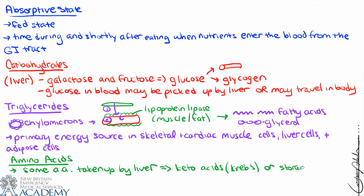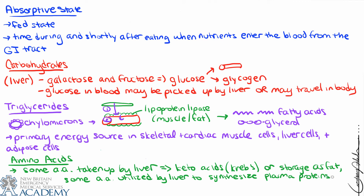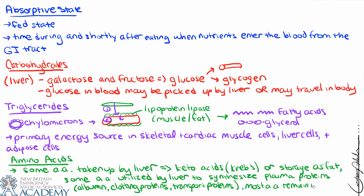Amino acids also enter the capillaries through the intestinal mucosa and travel to the liver via the hepatic portal system. In the liver, some amino acids are converted to keto acids for the Krebs cycle or stored as fat. Some are used to synthesize plasma proteins such as albumin, clotting proteins, and transport proteins. But most amino acids pass through the liver sinusoids and are taken up by other body cells.